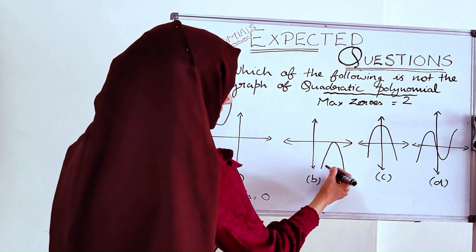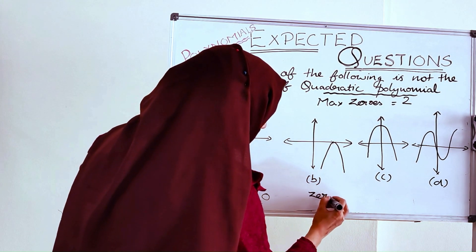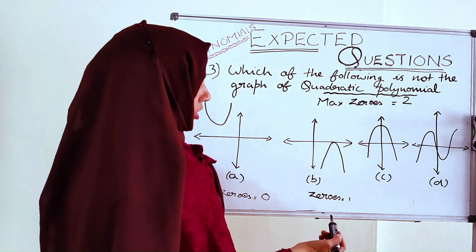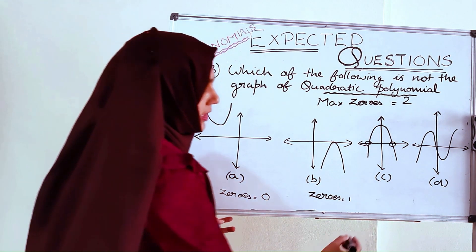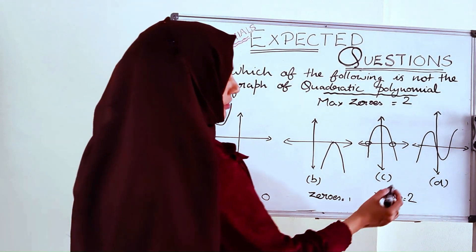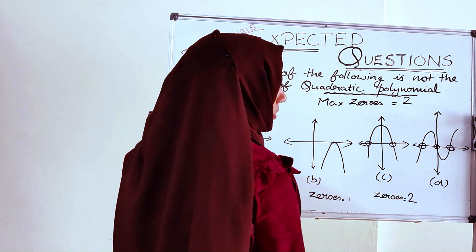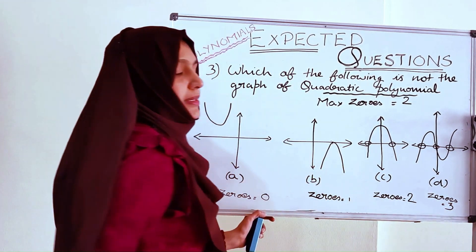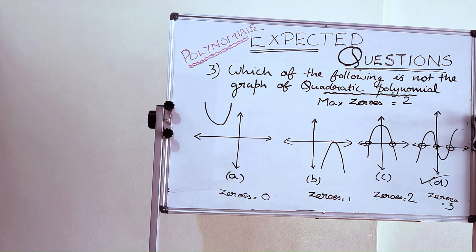The third graph is crossing the x-axis 2 times, so zeros = 2, which equals the maximum for a quadratic polynomial. The fourth graph is crossing the x-axis 3 times, so zeros = 3, and 3 is greater than 2. Therefore, this graph cannot be a graph of a quadratic polynomial. So option D is our answer.